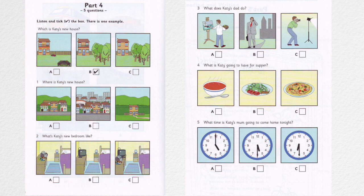Which is Katie's new house? Hello, Katie. Did you have a nice weekend in your new house? Yes, thanks, Mr. Brown. It's got a great garden, with some big trees for me to climb. What else has it got? It's got a lovely balcony, too. Can you see the tick? Now you listen and tick the box.